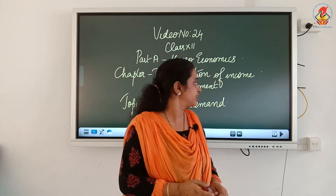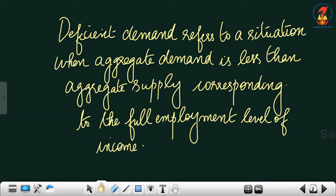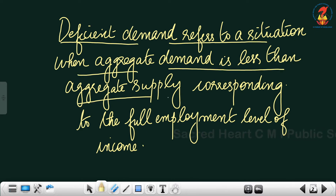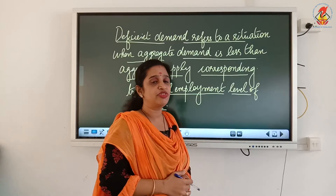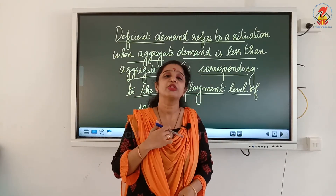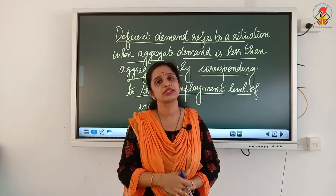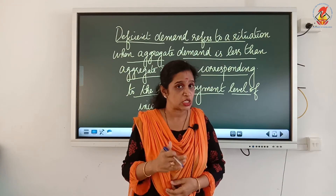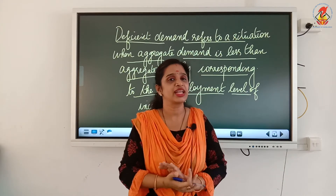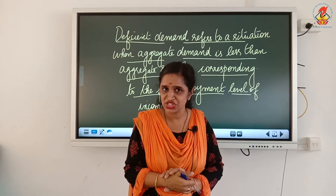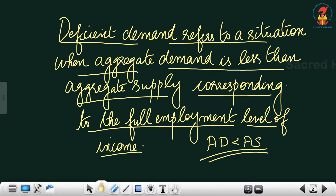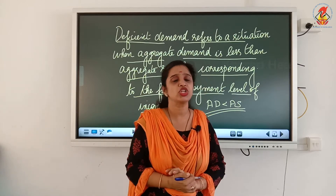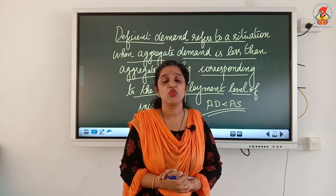Deficient demand refers to a situation when aggregate demand is less than aggregate supply corresponding to the full employment level of income. The full employment level is the point where aggregate demand equals aggregate supply. If aggregate demand is less than aggregate supply at that level, we call it deficient demand — meaning total expenditure of the people is less than what producers are planning to supply.